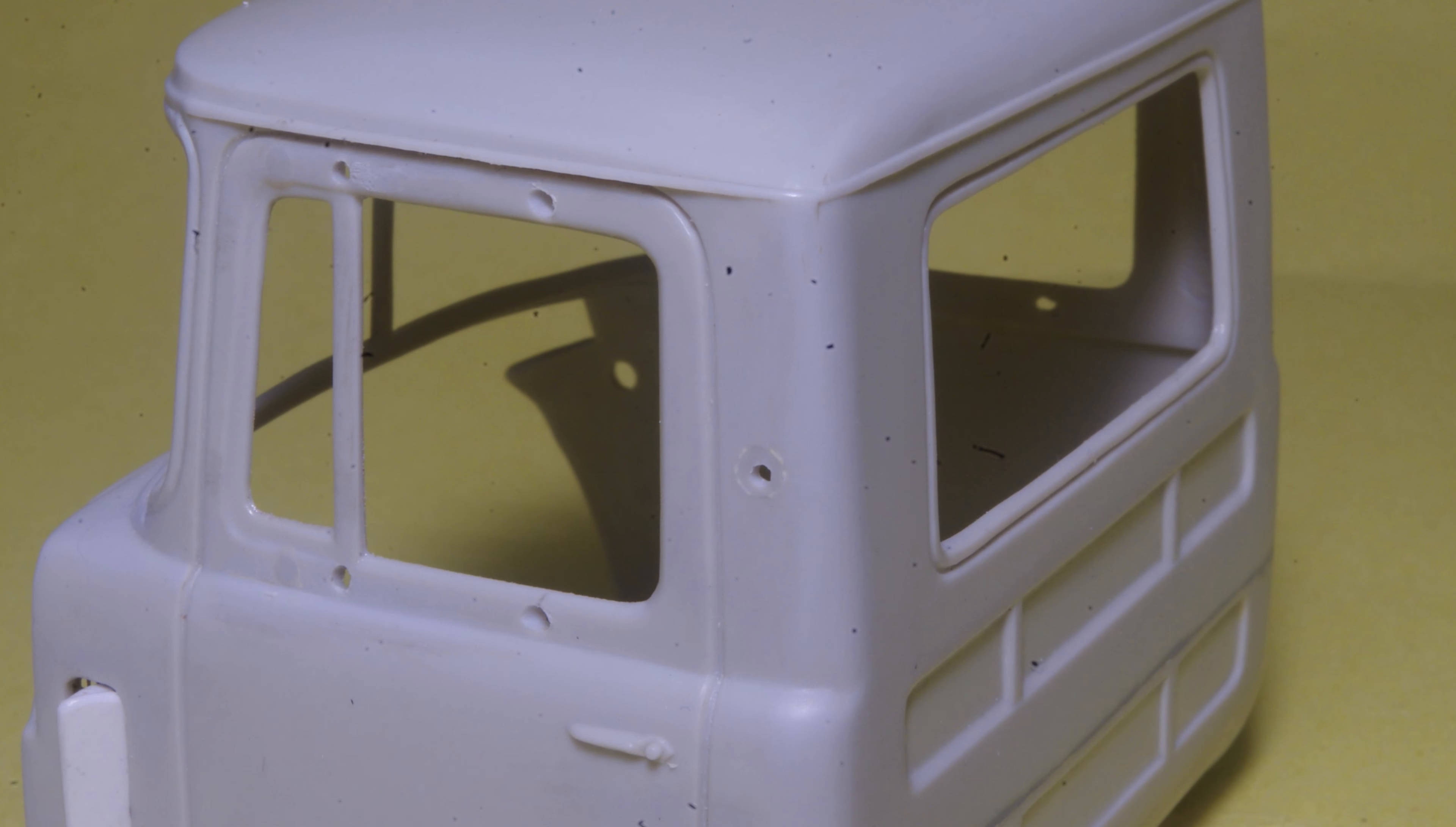Drill a 0.032 diameter hole in the center of where you plugged the hole in the side of the cab shell. This is now the attachment point for the top of the handrail.